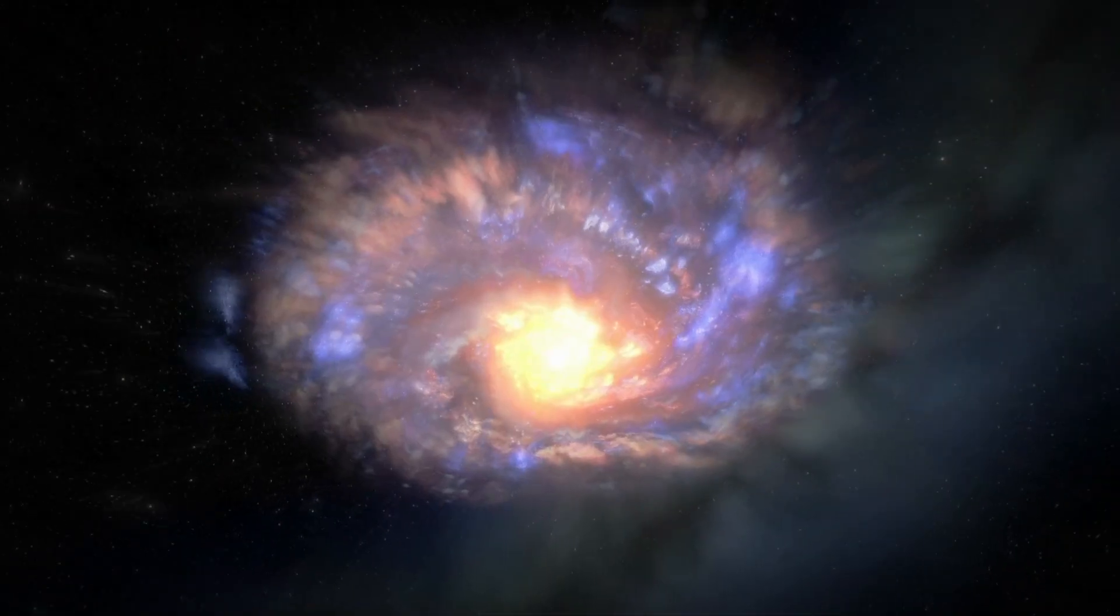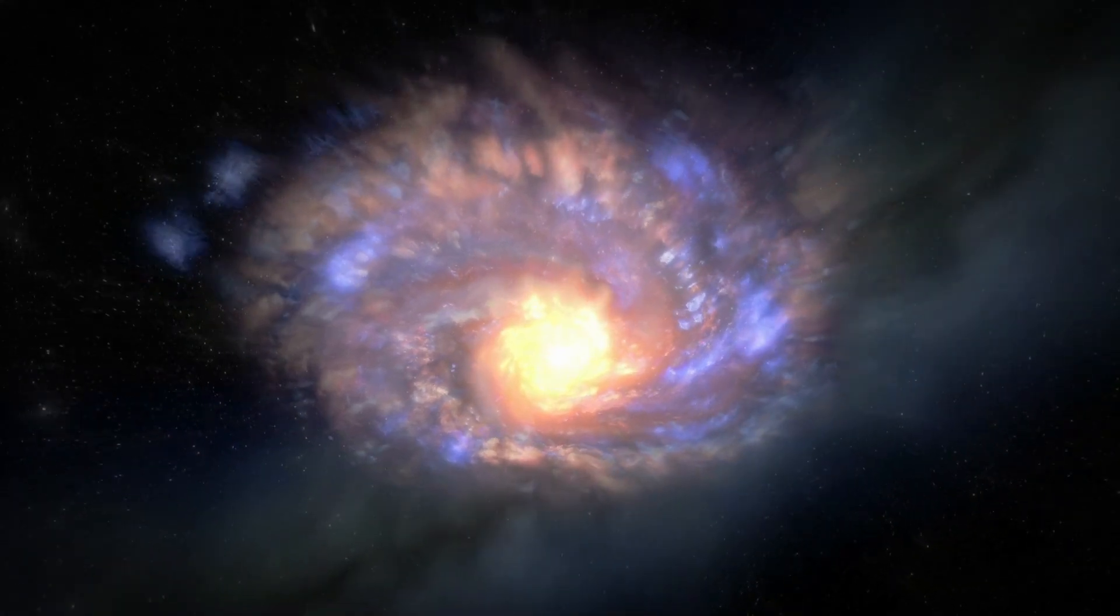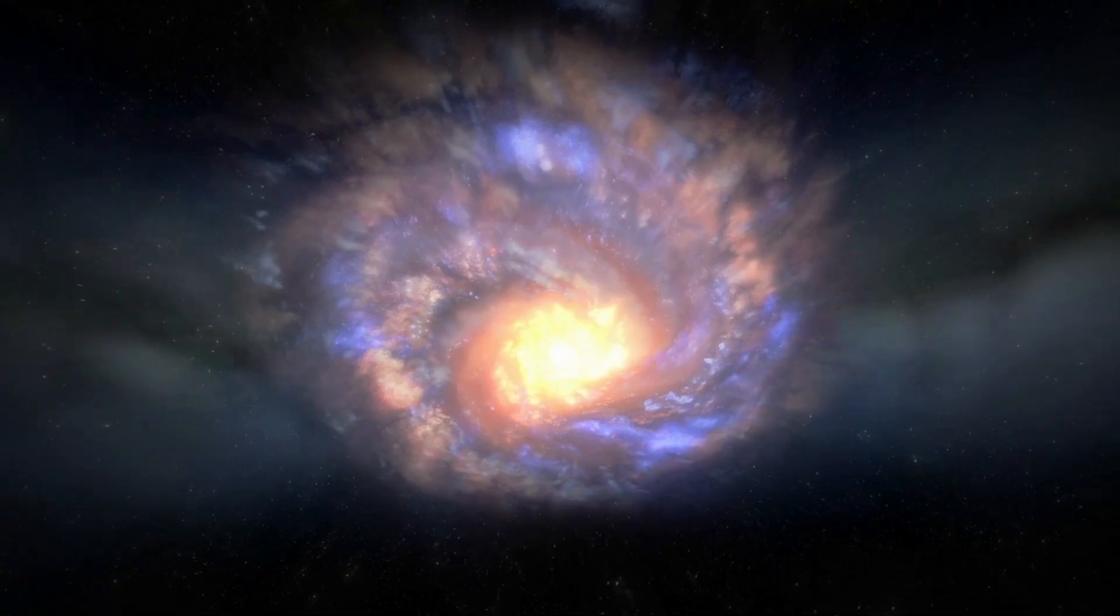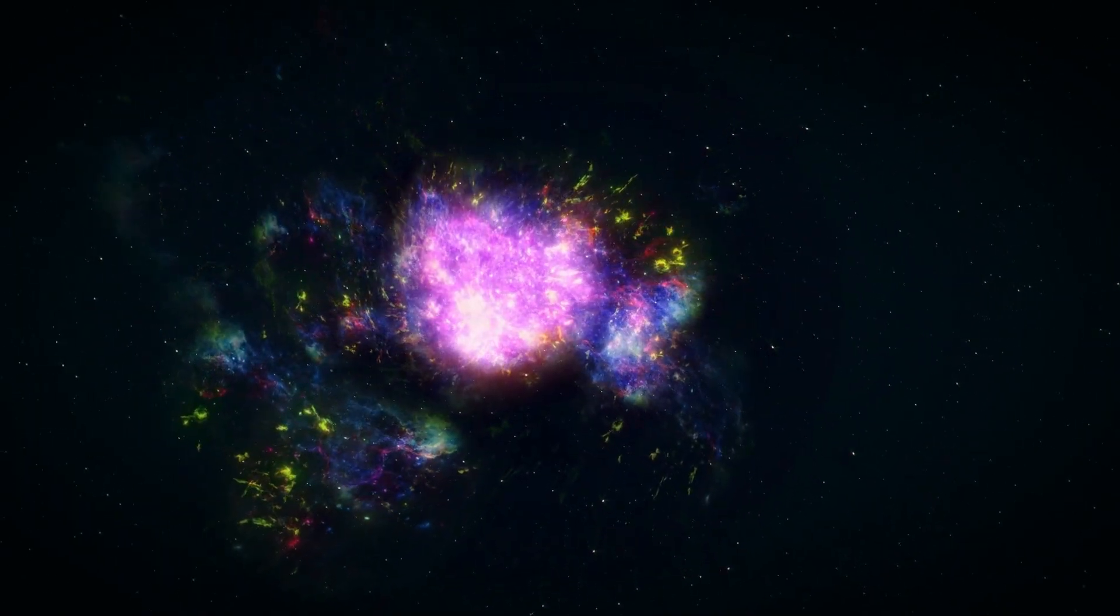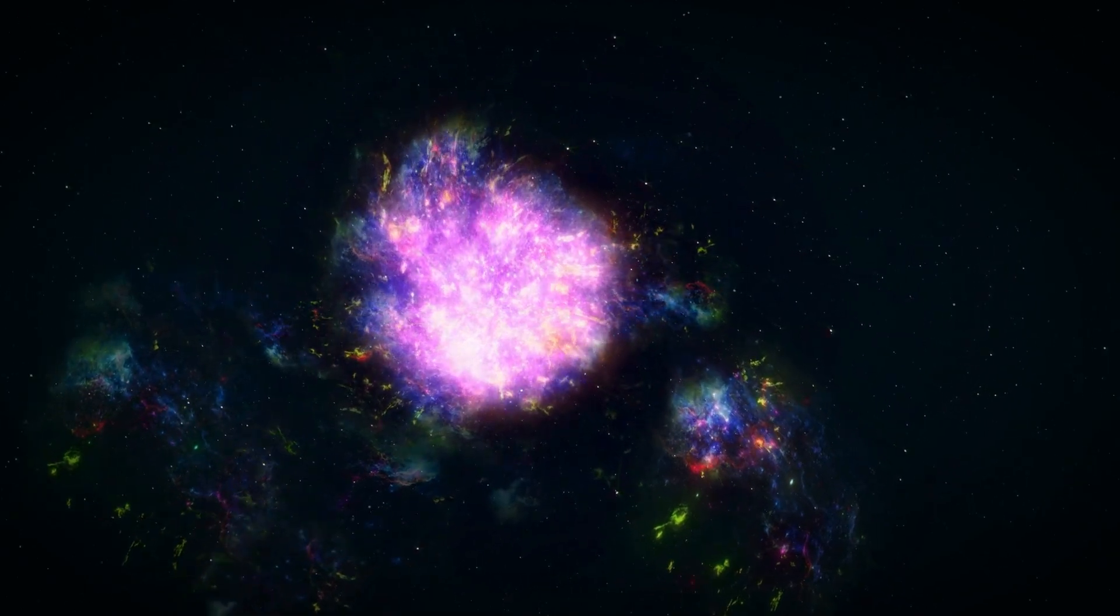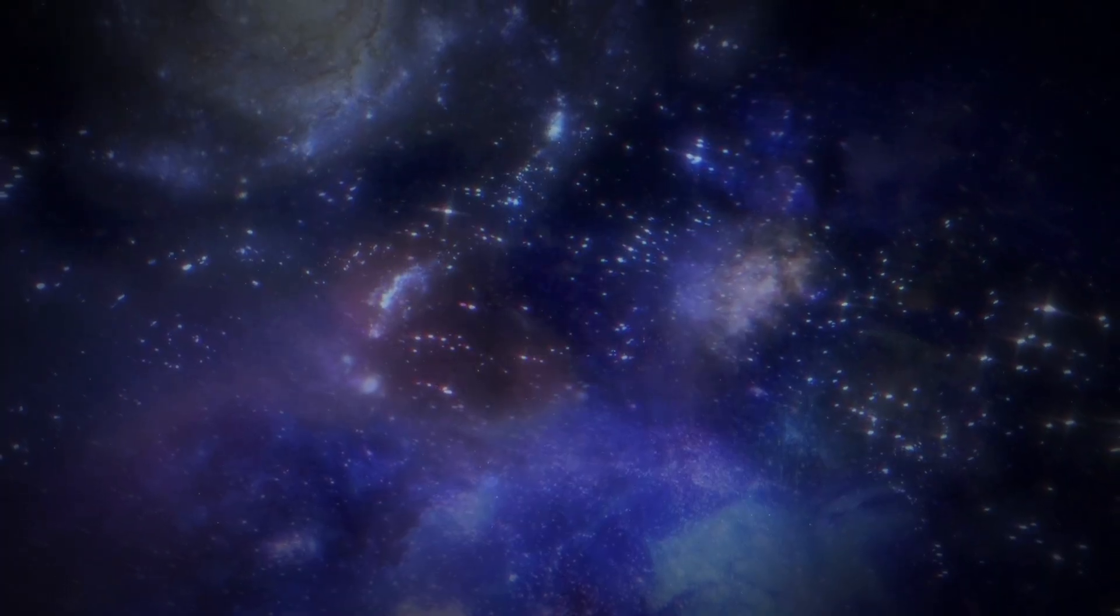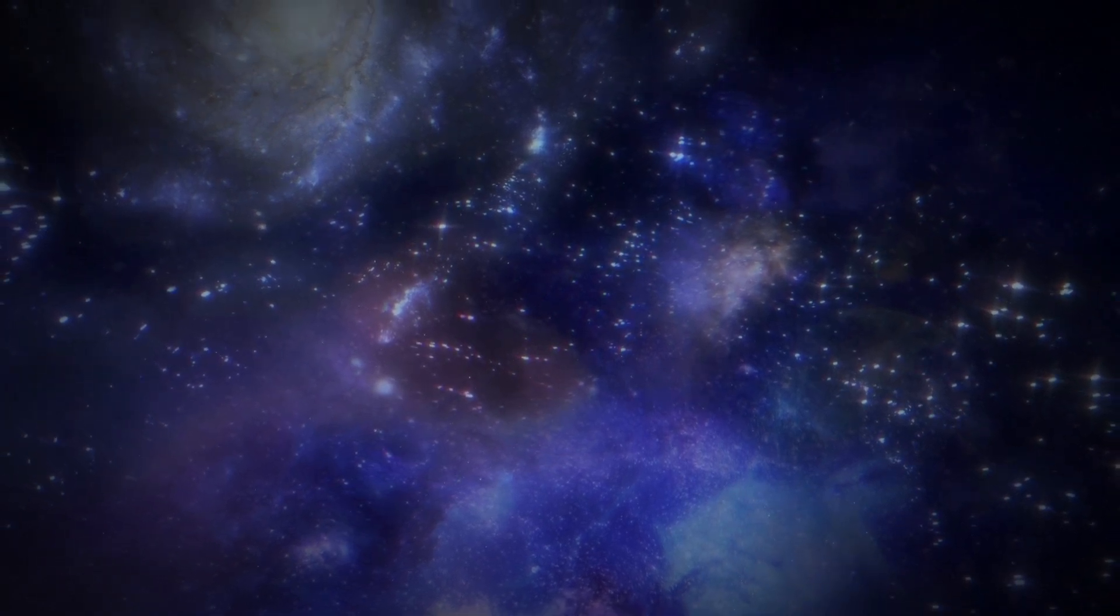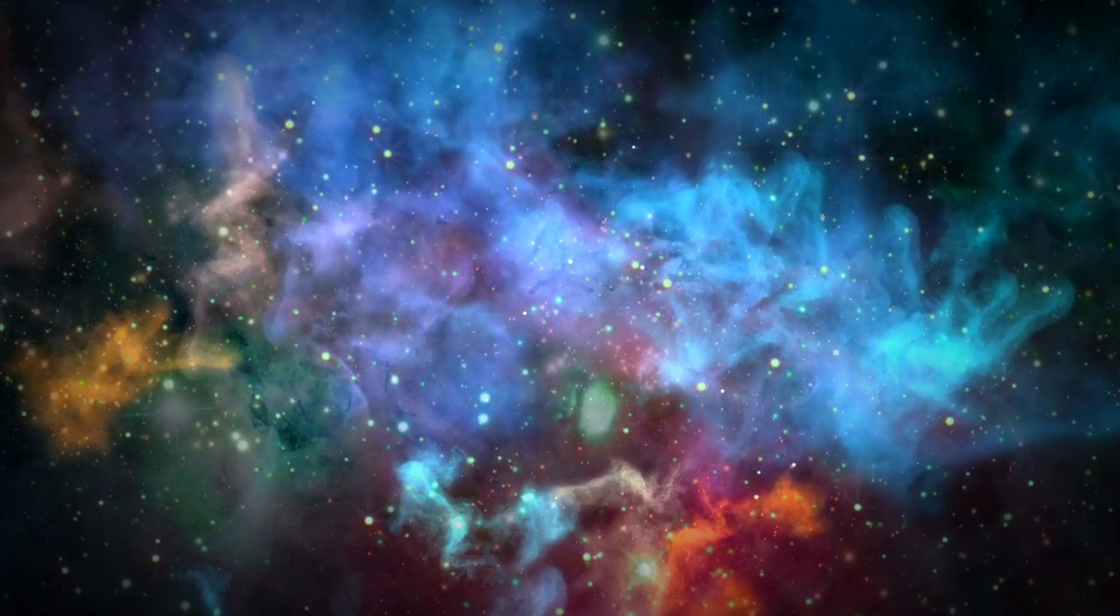Betelgeuse is a red star. However, it wasn't always red. It was yellowish about 2 million years ago, just like our sun. Over the years, the color started changing to orange-red, and then about 2,000 years ago, it slowly started becoming the red star we know today. This fact has made scientists believe that the star is getting old.